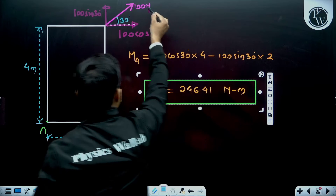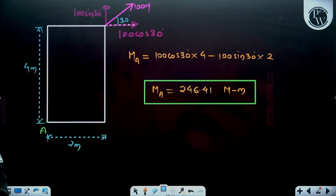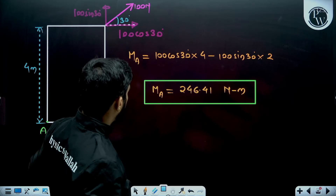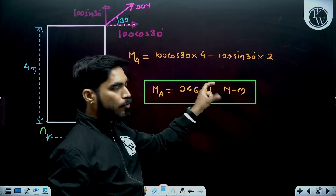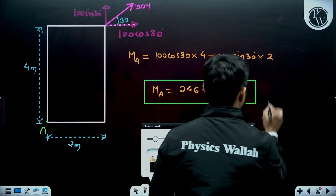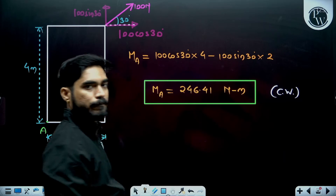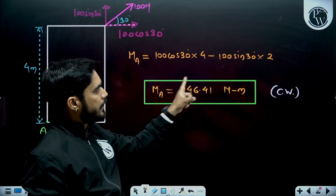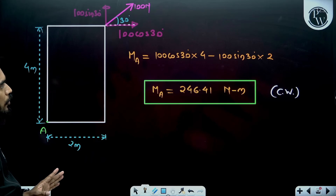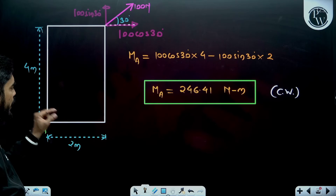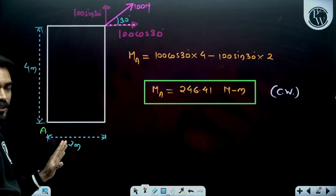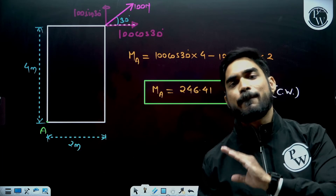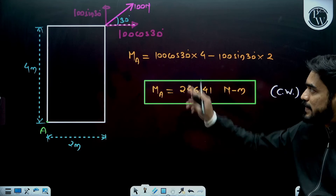So the moment of 100 Newton about point A is 246.41 Newton meter. Since I considered clockwise moment to be positive and I'm getting a positive value, this moment is clockwise. If I were getting a negative value, it would mean the moment is anti-clockwise. This is how you can find the moment of a force. If the normal distance is very difficult to find, you can resolve the forces into two components. This theorem will be used in many problems wherever you have to calculate moment of inclined forces.